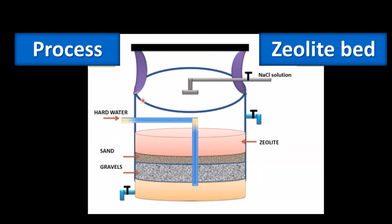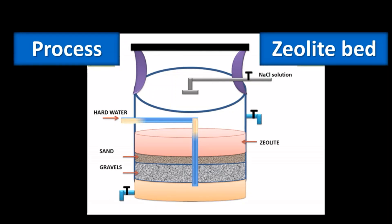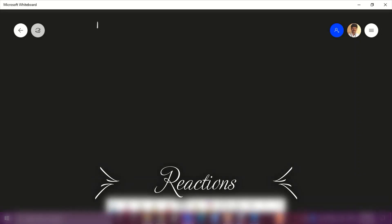In the actual water softening process, hard water is passed through a zeolite bed followed by sand and gravel. While passing through the sand, gravel, and zeolite, the water is softened — the cations present in the water are removed — and the resulting soft water is collected.